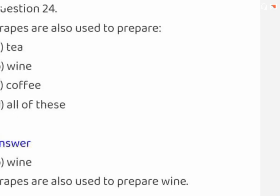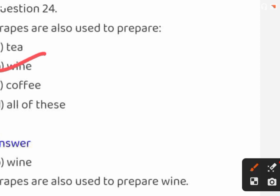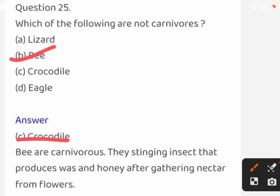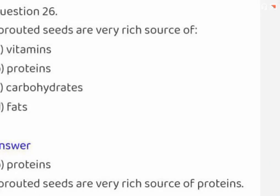Grapes are also used to prepare: tea, wine, coffee, or all of these. The correct answer is wine. Which of the following are not carnivores? Lizard, bee, crocodile, or eagle. The correct answer is B (bee). Sprouted seeds are a very rich source of: vitamins, proteins, carbohydrates, or fats. The correct answer is proteins.